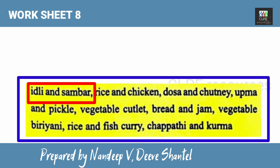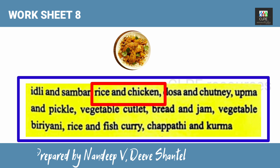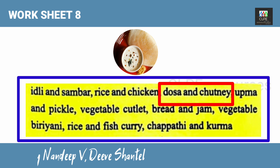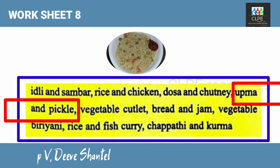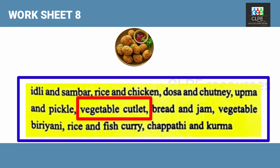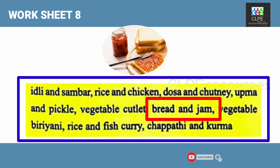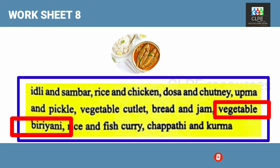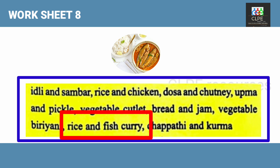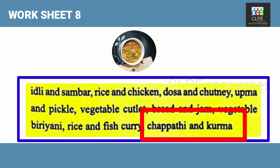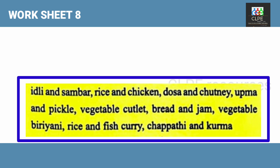The food items listed are: idli and sambar, rice and chicken, dosa and chutney, uppuma and pickle, vegetable cutlet, bread and jam, vegetable biryani, rice and fish curry, and chapati and kurma. These are the names of the different food items.